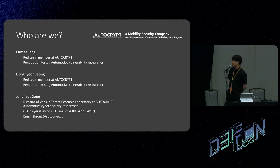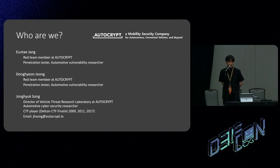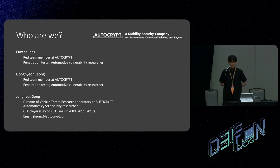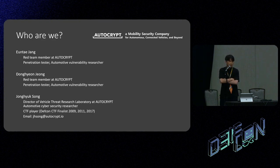First, I'm going to introduce my team. We are all Red Team members and offensive security researchers at AutoCrypt. AutoCrypt is a mobility security company especially focusing on automotive security. We have been conducting penetration tests and fuzzing tests with OEMs and Tier 1 companies. We are actually doing security tests on real cars with car companies.